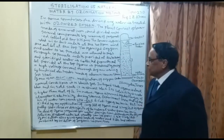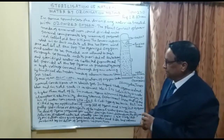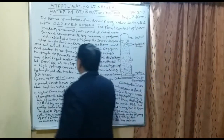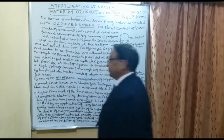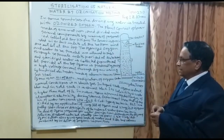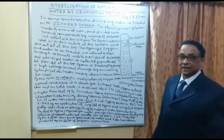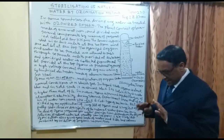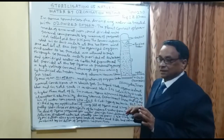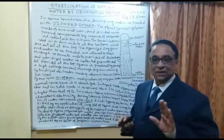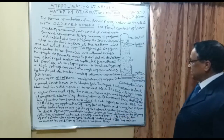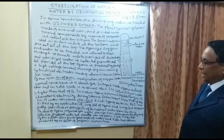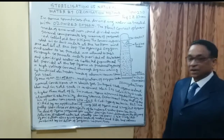Ozone is an allotropic modification of oxygen. Under normal conditions, it is a bluish gas. In liquid state, ozone is dark blue, and in solid state it is almost black in color.